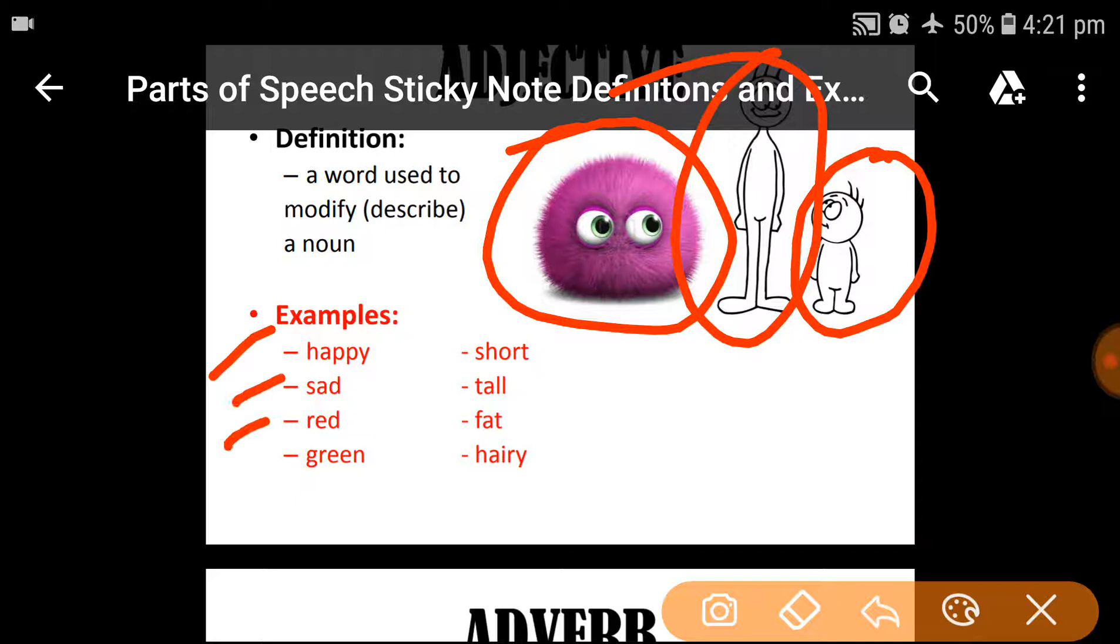Next, here are some examples. Happy, sad, red, green, short, tall, fat, hairy.